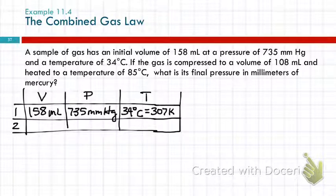If the gas is compressed, so that's indicating that something's changing. We have another volume, 108 milliliters. And a temperature of 85 degrees Celsius. Convert that to Kelvin. 85 plus 273, 358. What is the final pressure? Okay, so we've got this blank here. We're going to call that P2.